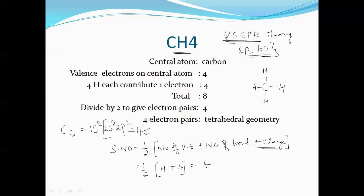For carbon as the central atom, the total number of valence electrons are 4, and there are 4 hydrogens attached, so the number of bonds is 4. As there is no charge, we ignore it. The steric number comes to 4, which means there are 4 orbitals on the central atom — these can be either lone pairs or bond pairs of electrons.